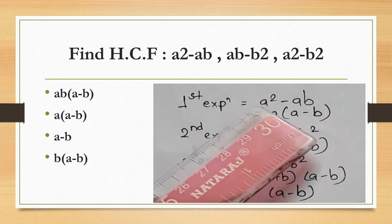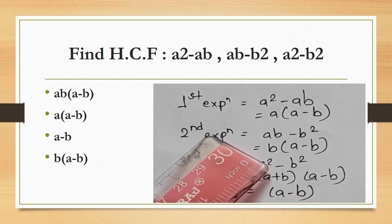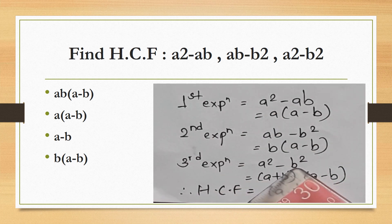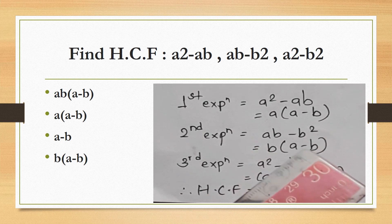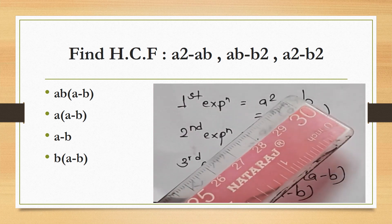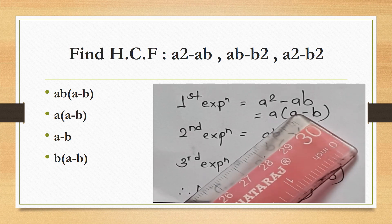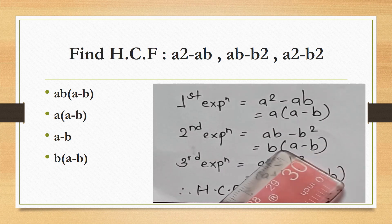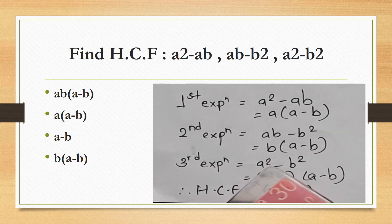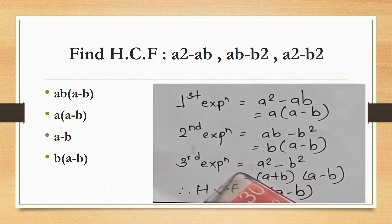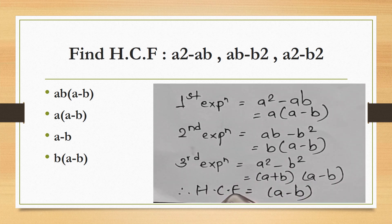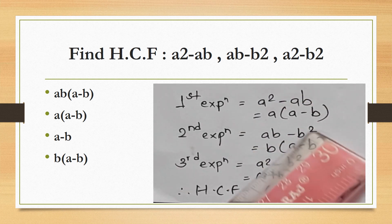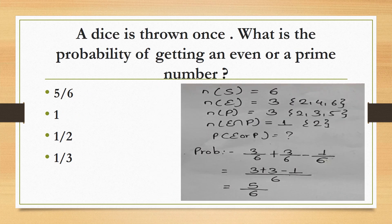Find the HCF of: first expression a² − ab, second expression ab − b², third expression a² − b². Factoring: a² − ab = a(a − b); ab − b² = b(a − b); a² − b² = (a + b)(a − b). The highest common factor across all three expressions is (a − b).